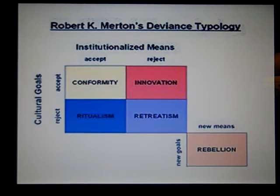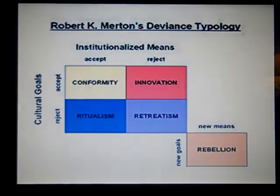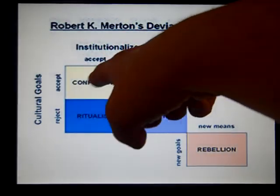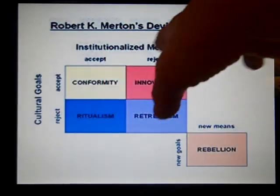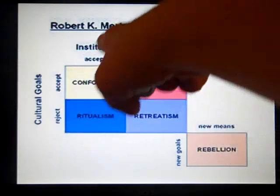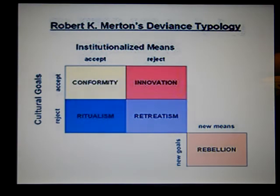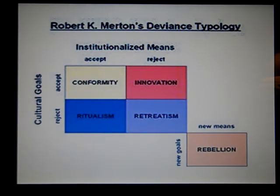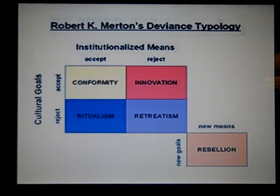Let's look at the typology. Let's say the cultural goal is to make money. Conformity — if you conform to this typology, that means you accept the goal of making money and you accept the legitimate means of going about it. A legitimate way of making money in society is to get a job, go to college first, get a job.